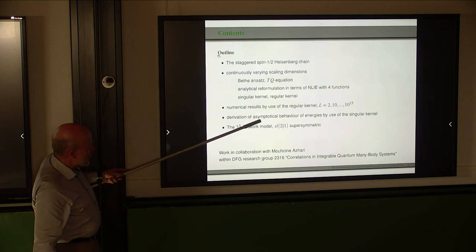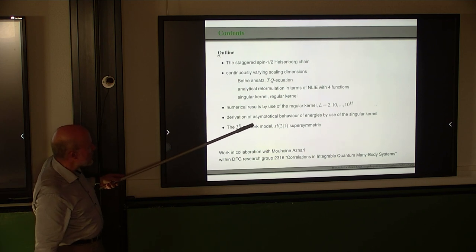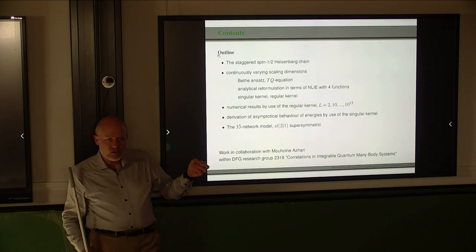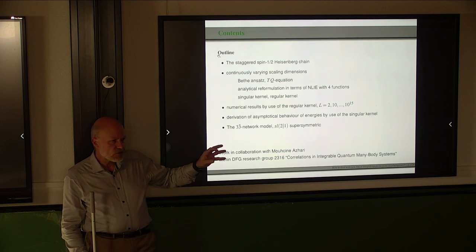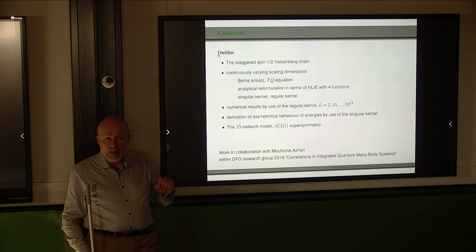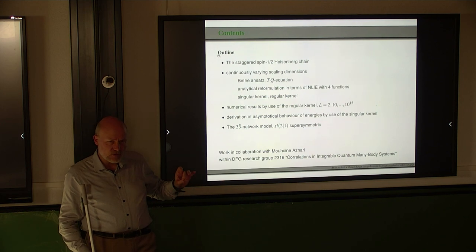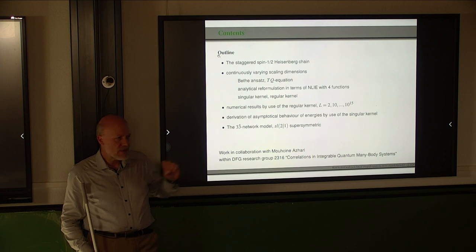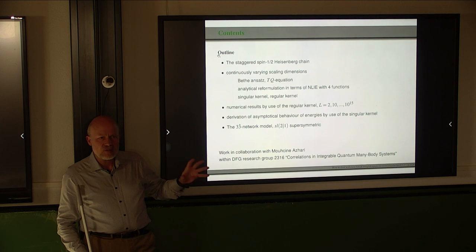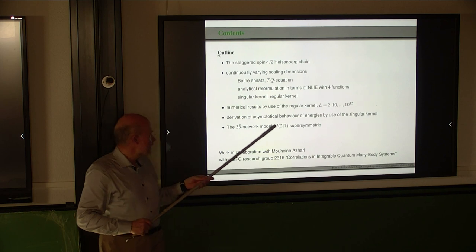The singular kernel version of the integral equations is not useless — it actually allows us to derive the asymptotic behavior of the energies. So we get the scaling dimensions, the 1/L correction terms, but also the 1/L times 1/(log L)² terms analytically from the nonlinear integral equations in the singular kernel form, just from the asymptotics of the functions. So we never have to solve the nonlinear integral equations analytically in order to get the asymptotic behavior.